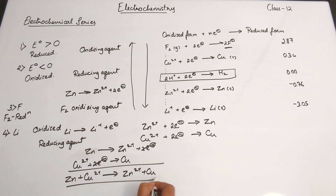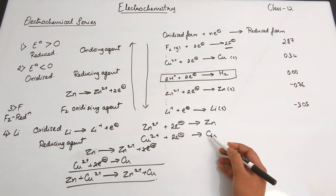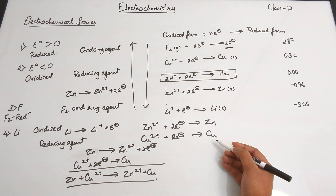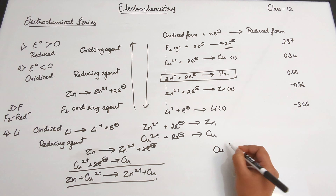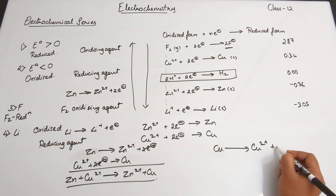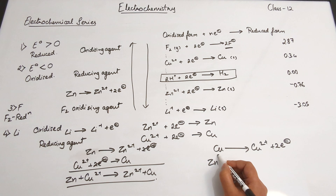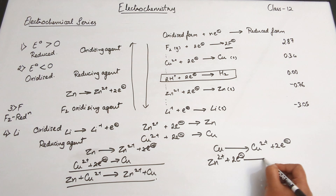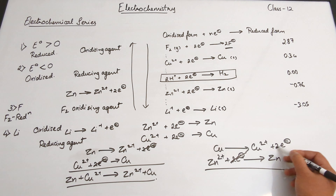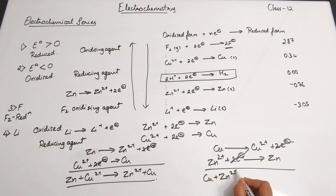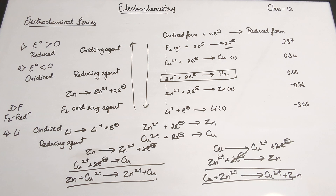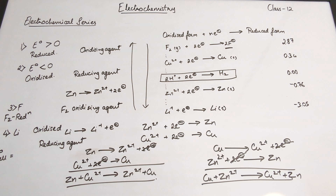So we've talked about the standard hydrogen electrode in the middle with a potential of zero. Above it are the positive values — these undergo reduction because their reduced forms are more stable than the oxidized forms, and they form good oxidizing agents. Below it, these make good reducing agents because they have a high capability of undergoing oxidation. As we go from top to bottom, the strength of reducing agents increases, and from bottom to top, the strength of oxidizing agents increases.